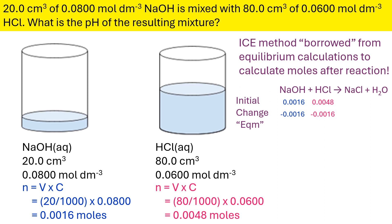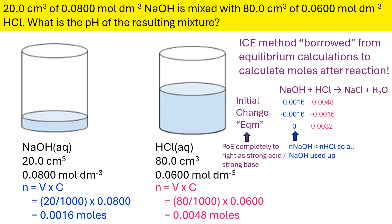What will happen with the HCl is you'll use up an equal amount to the sodium hydroxide. So basically if you have 0.0016 moles of sodium hydroxide, that will use up an equal amount of the HCl, so what's left behind is 0.0032 moles. Remembering the position of equilibrium is completely to the right — it's a strong acid strong base reaction, so all the sodium hydroxide is used up. This is the remaining moles of HCl after the two liquids have been mixed.